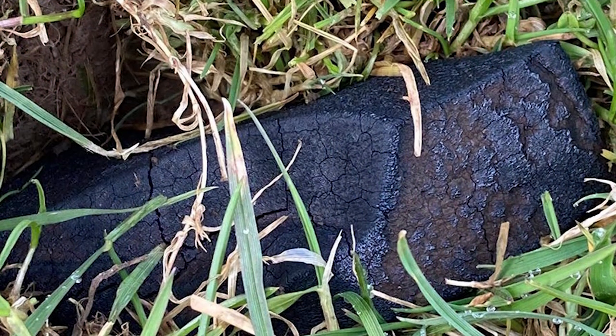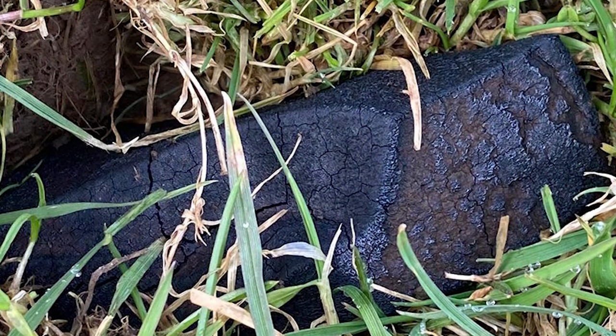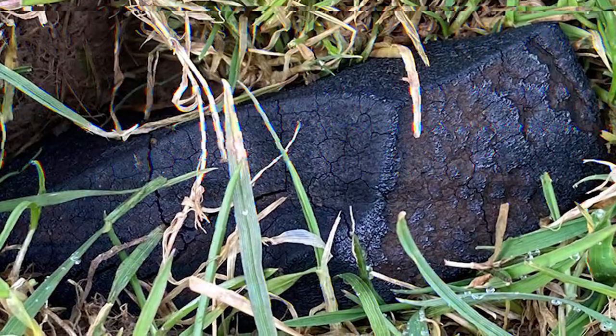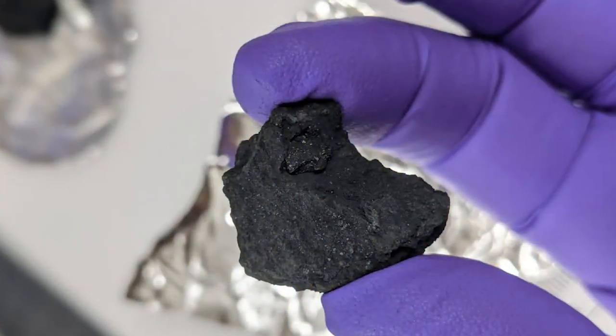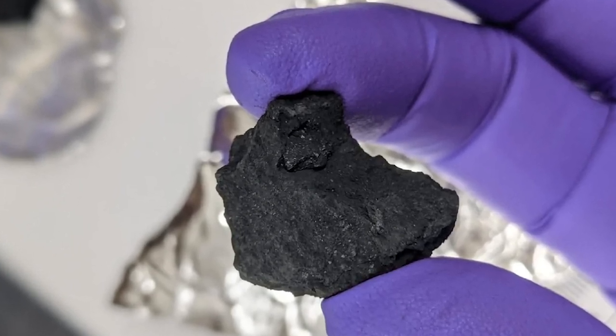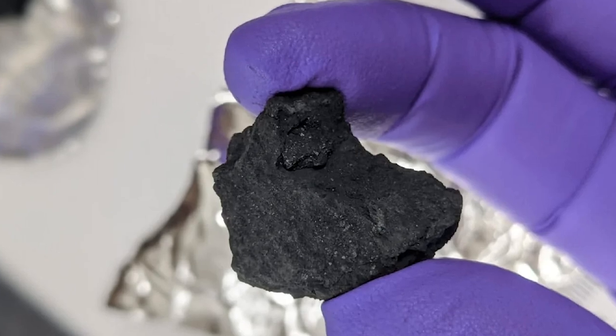Of course, once the neighbors heard of the news and saw the Wilcox frantically searching about the suburbs, they too joined in on the hunt. Altogether, 319 grams of meteorite pieces were accounted for and wrapped in a bag to be brought to London for further examination.